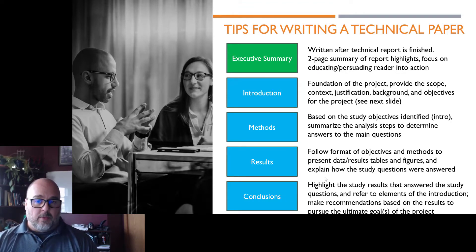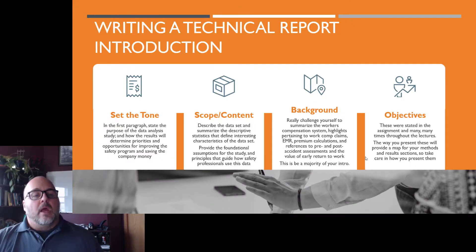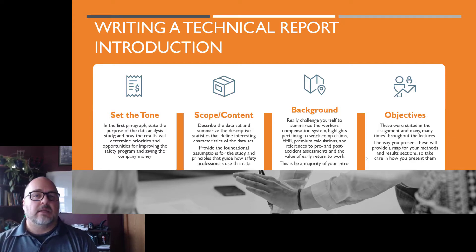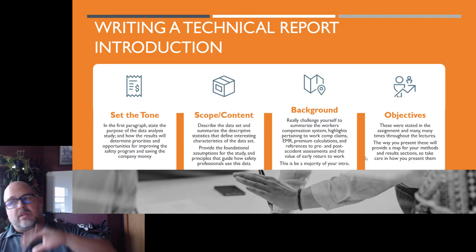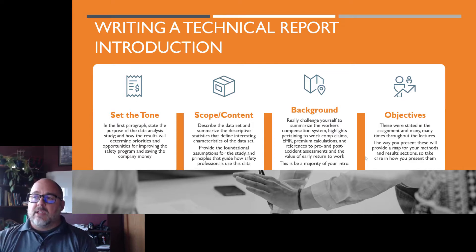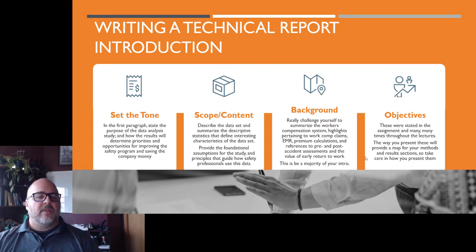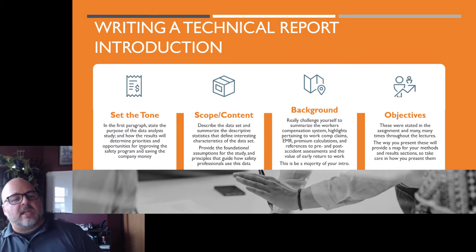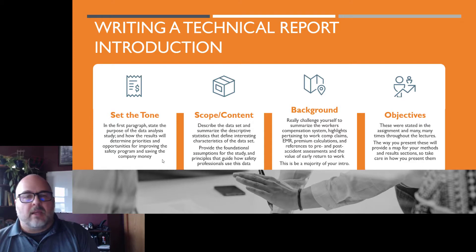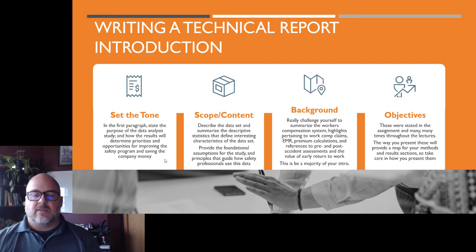Once you've written the report, you write the executive summary — pick out what you want. For the technical report's first paragraph, you must set the tone. Be very direct. State the purpose of the data analysis study, how the results will be determined, and how the results will determine priorities and opportunities for improving the safety program and saving the company money. Don't take that word for word, but that's the first paragraph.